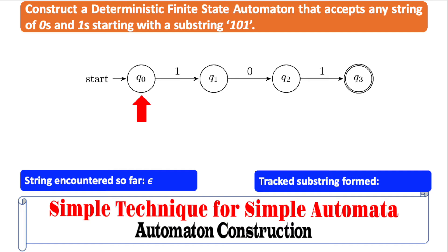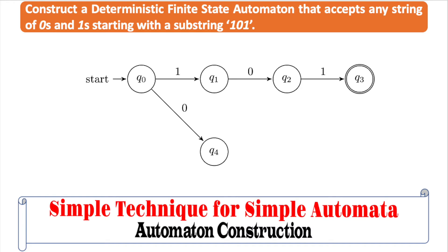But if we encounter a 0 from q0, it can never form a string starting with 101 because the first input is 0. So if a 0 is encountered from q0, we have to introduce a new state called the dead state, as shown on the screen, and let the automaton go to such a dead state, that is q4. When it reaches the dead state, it cannot get out of it for the succeeding inputs, because the string can never start with the substring 101 anymore.